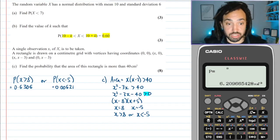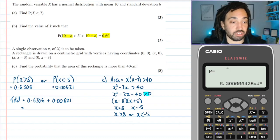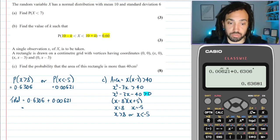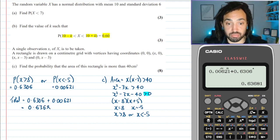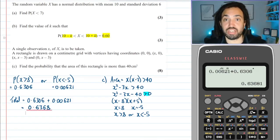Okay, great. So the total probability of getting a correct value of x will just be these two added together. And once I've done that, that should give me my final answer of 0.6368. Okay, well I hope you enjoyed that and I'll see you tomorrow for a pure question. Bye for now.